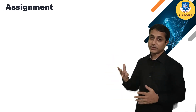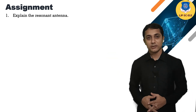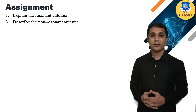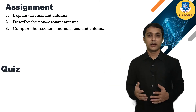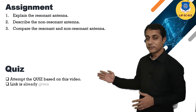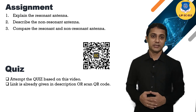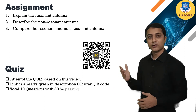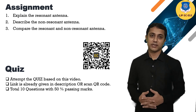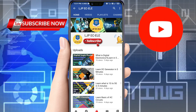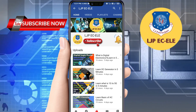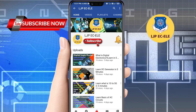At last, we have some assignments for you. Note down these questions: first, explain the resonant antenna; second, describe the non-resonant antenna; third, compare the resonant and non-resonant antenna. You can also attempt the quiz based on this video — the link is given in the description box or you can scan the QR code. There are 10 questions with 50 percent passing marks. This is the end of this session on antenna and wave propagation. We will see more antenna types in our next session. If you like this video, please subscribe and like our YouTube channel LJPEC-ELE, and don't forget to click on the bell icon to get the latest video updates first.